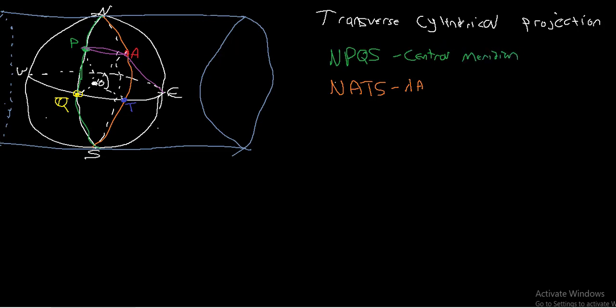And this would be given. You have to be given the central meridian, otherwise you would assume that it's centered at zero. So if you're given the central meridian, you're given the meridian of NPQS, and NATS is the longitude of A. Now the way that we're going to do this is we're actually going to describe A in terms of two values, and these are the values that you're going to see being used in the equations that deal with the transverse cylindrical projections.